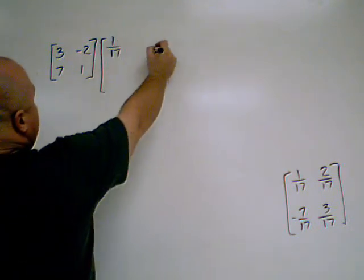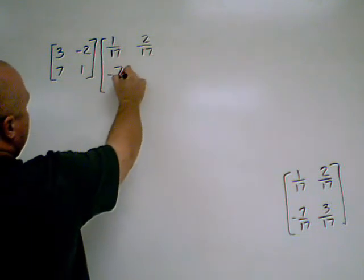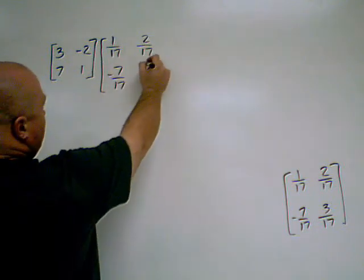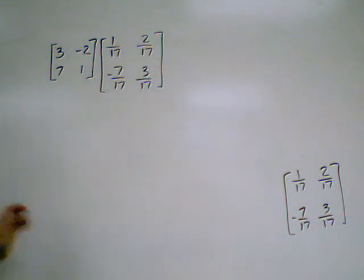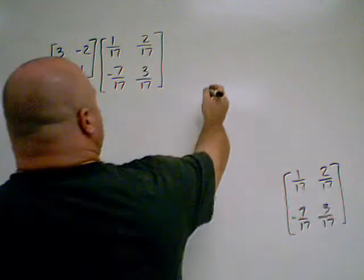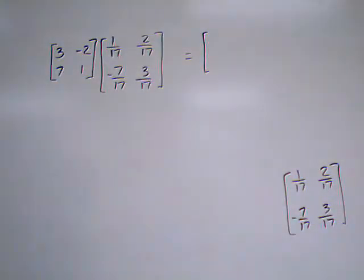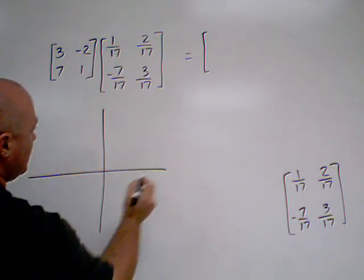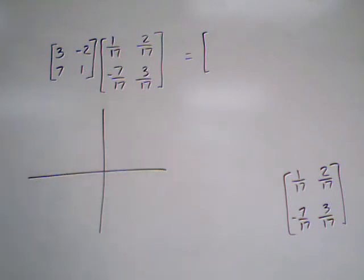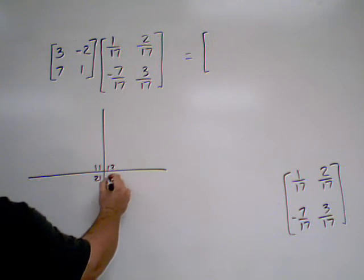What we're going to do to check it is we're going to multiply it by our inverse. So, 1 over 17, 2 over 17, negative 7 over 17, and 3 over 17. So, we're going to multiply this, and we're going to figure out what we get. Now, let's set up our scratch paper, just like we did when we did our matrix multiplication video. We've got 1,1, 1,2, 2,1, and 2,2.